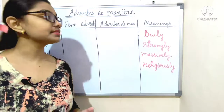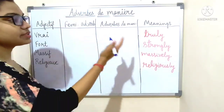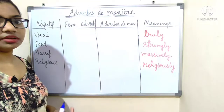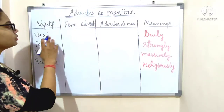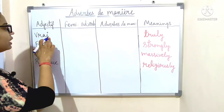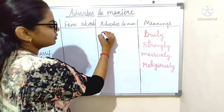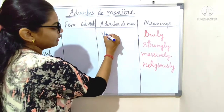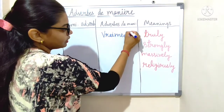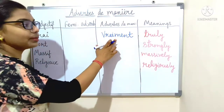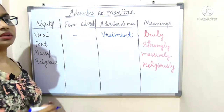Next: 'vrai', which means 'truly'. It ends with the vowel I, so we directly add '-ment': 'vraiment', which means 'truly'.